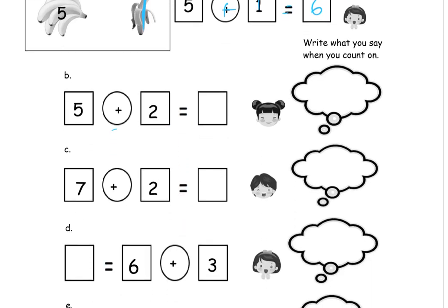So now here we have this one. We've got 5, plus 2 more. So 5, 6, 7. So 5 plus 2 more is 7, right? Because it's 1, 2 more. 6 and 7 are the 2 more.